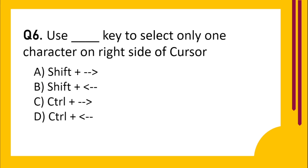Question number 6. Use dash key to select only one character on the right side of the cursor. Option A: Shift plus right. Option B: Shift plus left. Option C: Control plus right. Option D: Control plus left. The correct answer is Option A: Shift plus right.